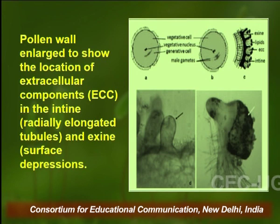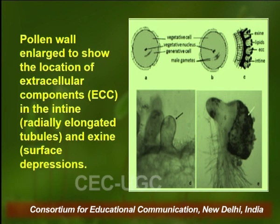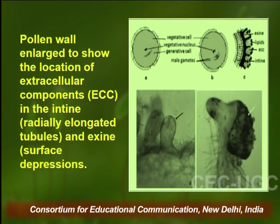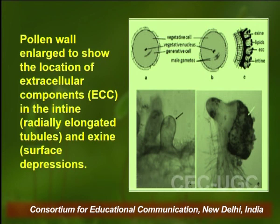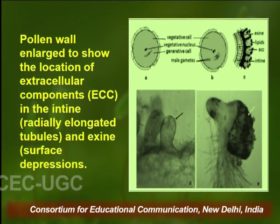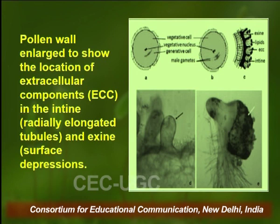Here you can see a picture of pollen wall which has been enlarged to show the location of the extracellular components. These extracellular components are present both in the intine as well as the exine. When present in the intine, they are in the form of radially elongated tubules, and in the case of exine they are in the form of surface depressions.